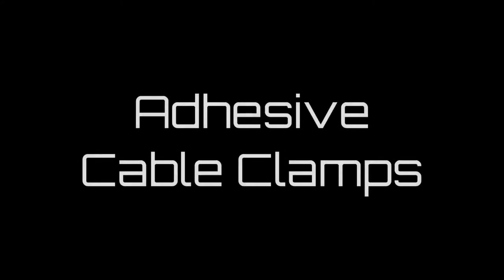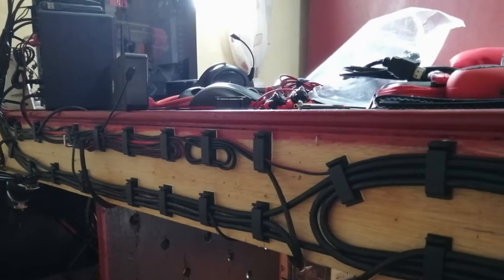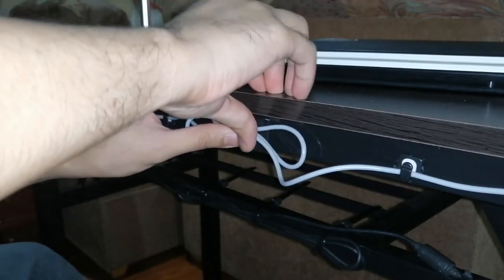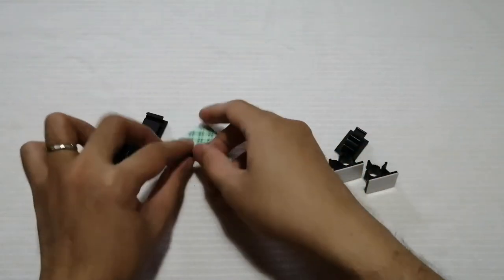Adhesive cable clamps. Clamps that can also be mounted to a surface. Provides a neat highway of cables when implemented on walls or tables. Cables can be inserted or removed easily. They are relatively cheap and most of the time available in sets.